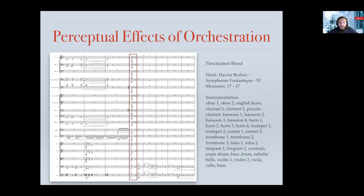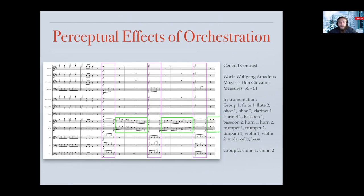The second example is a punctuation blend in the fourth movement of Berlioz's Symphonie Fantastique, where we have all instruments playing together at the start of measure 17, also shown in the red box on the score. The last example is the contrast effect in Mozart's Don Giovanni, where there is a call shown in purple on the score and a response shown in green. The alternation of the two groups of instruments and the repetition of the note pattern played by each group create a contrast.